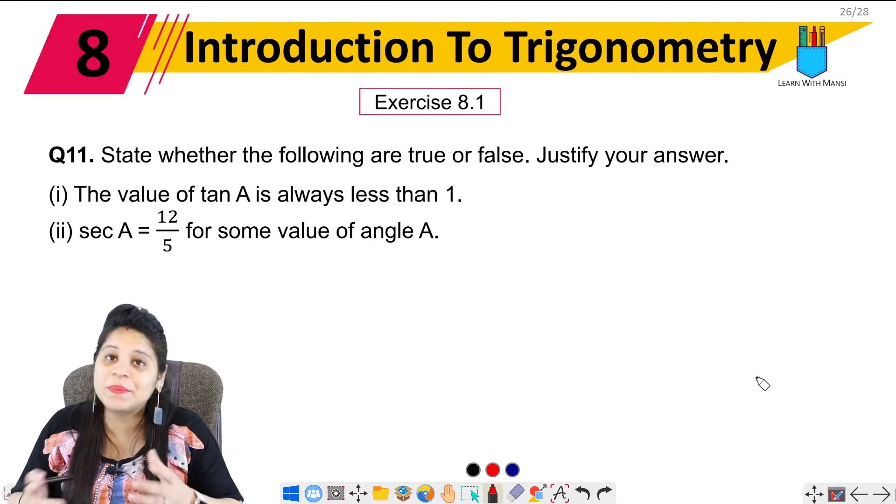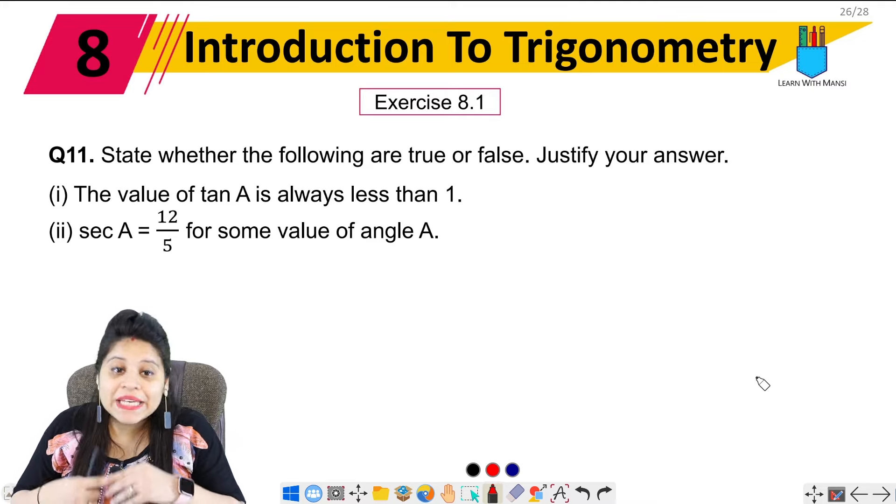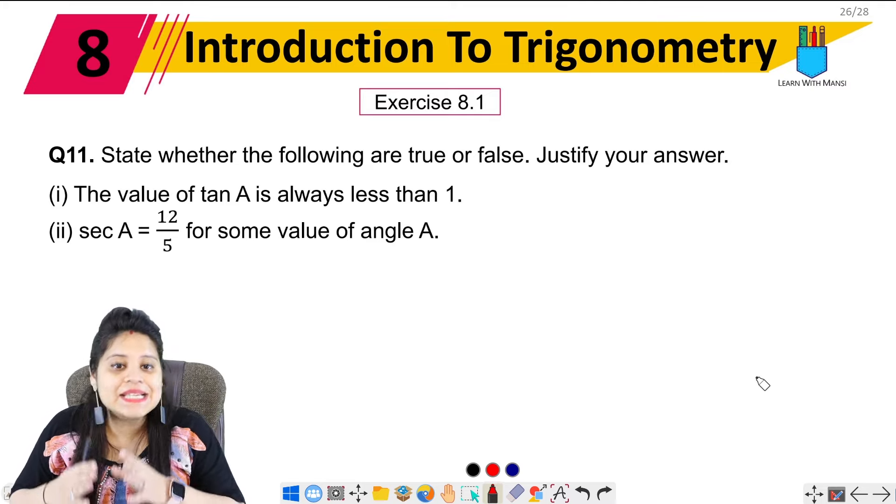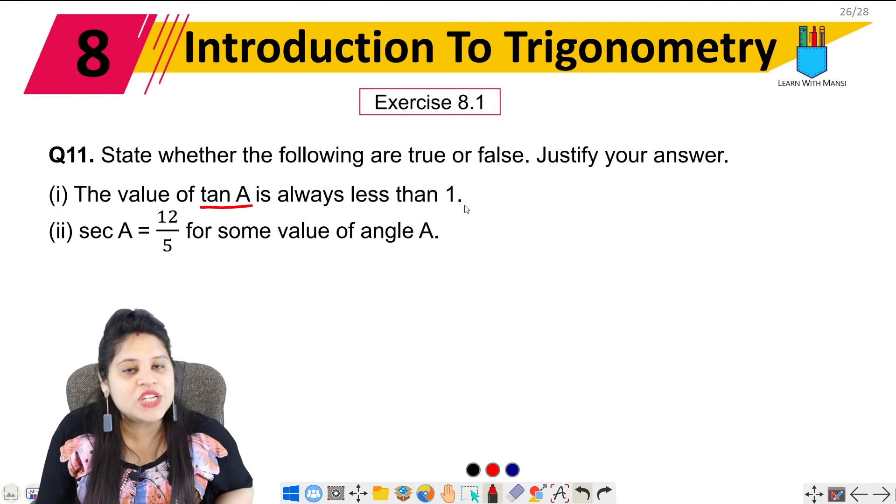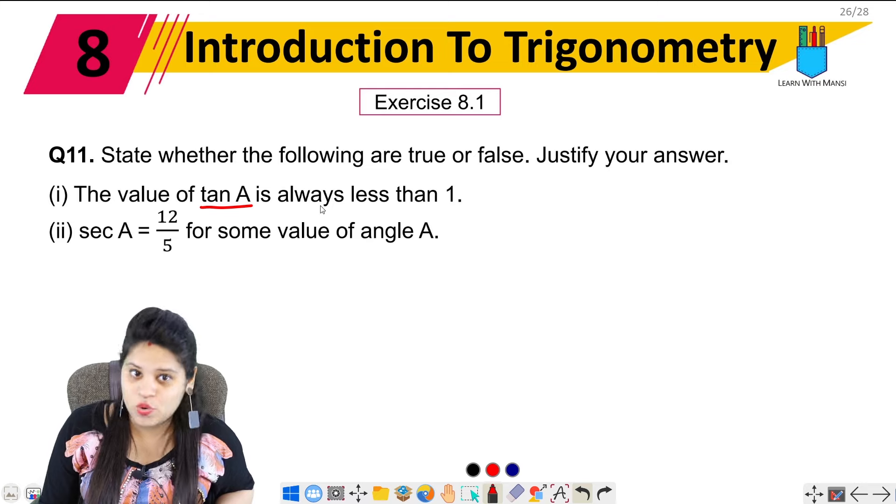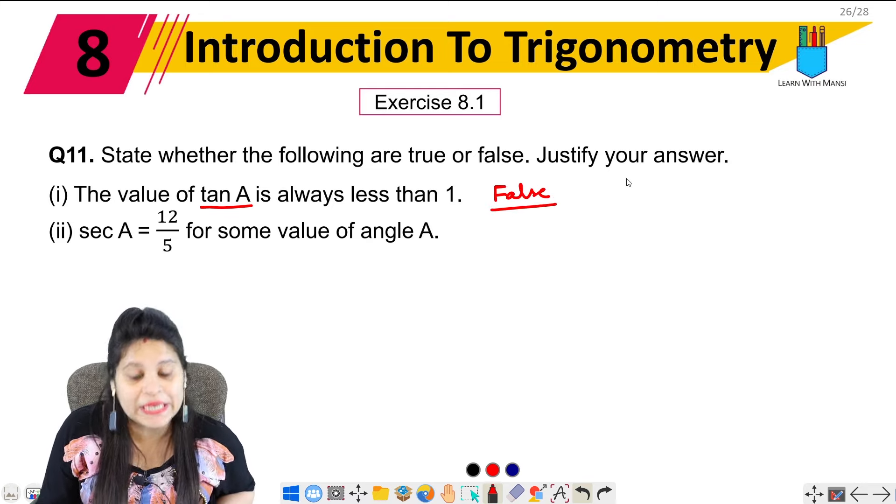So we have to tell true and false and justify your answer. First part is the value of tan A is always less than 1. Now this statement is false. Why it is false? We have to justify it.